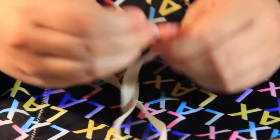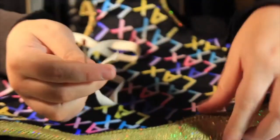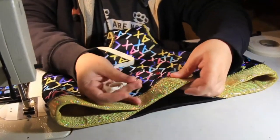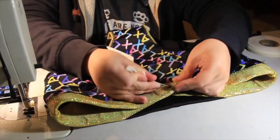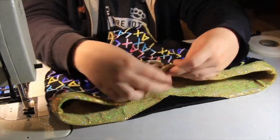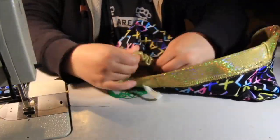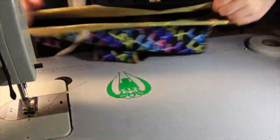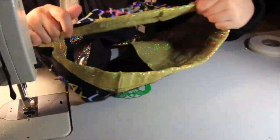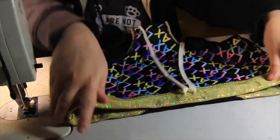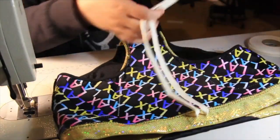The final step is to thread a drawstring through what is now a drawstring casing. We use some thin twill tape, cut about three times the waist measurement of the client. Kate is using a tool called a bodkin to make the process go faster. Now, your trunks are complete.